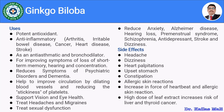Ginkgo biloba reduces symptoms of psychiatric disorders and dementia. It helps improve circulation by dilating blood vessels and reducing the thickness of platelets, acting as an anti-platelet agent. It supports vision and eye health, treats headache and migraine, and treats sexual dysfunction. It reduces anxiety and is used in Alzheimer's disease, hearing loss, premenstrual syndrome, schizophrenia, as an antidepressant, and in the management of stroke.